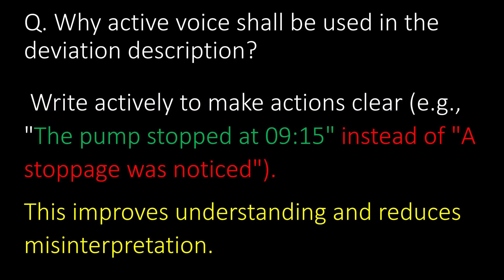Why should active voice be used in the deviation description? Write actively to make actions clear. For example, use 'the pump stopped at 9:15' instead of 'a stoppage was noticed.' This improves understanding and reduces misinterpretation.